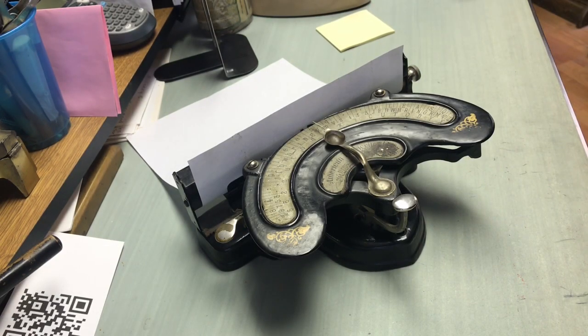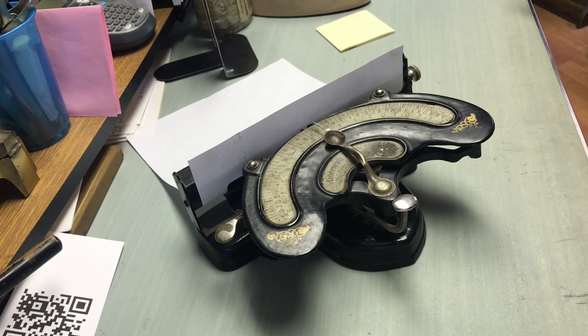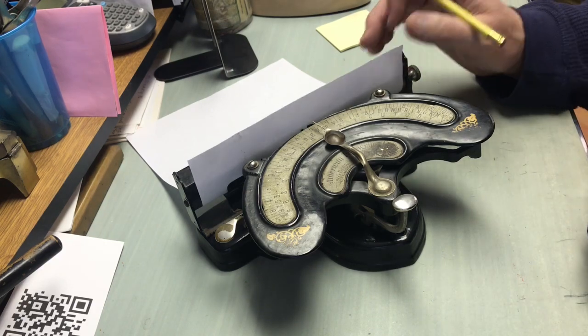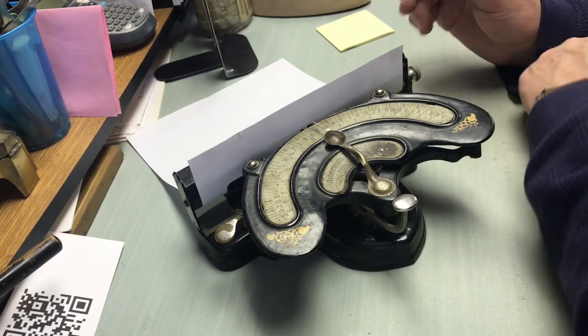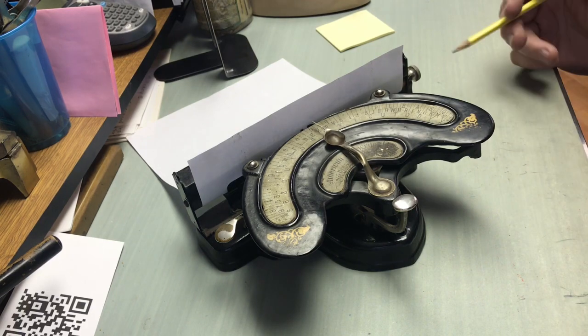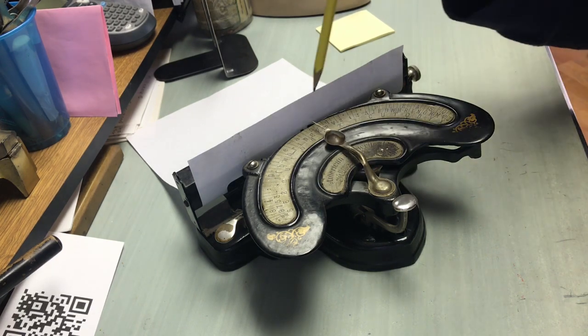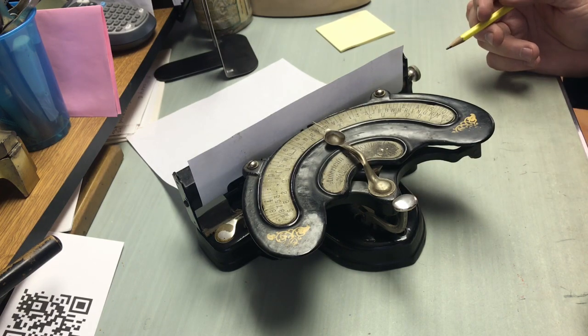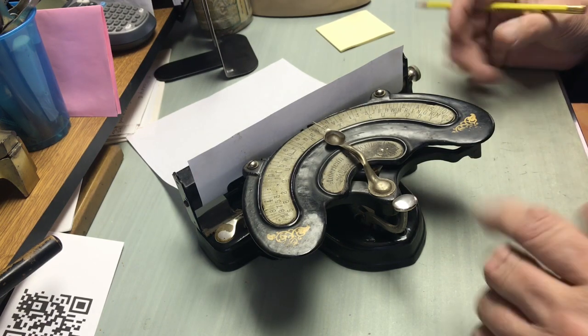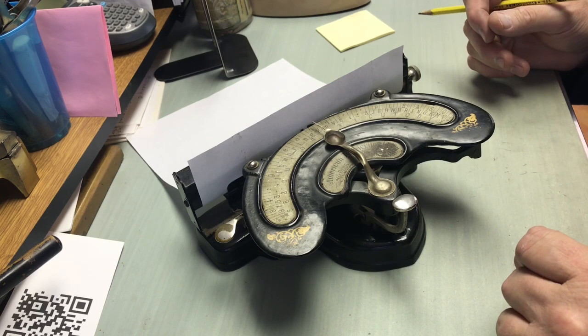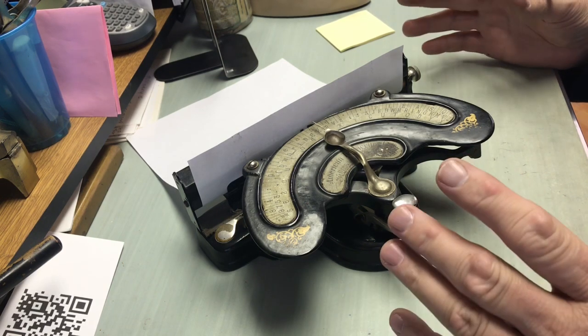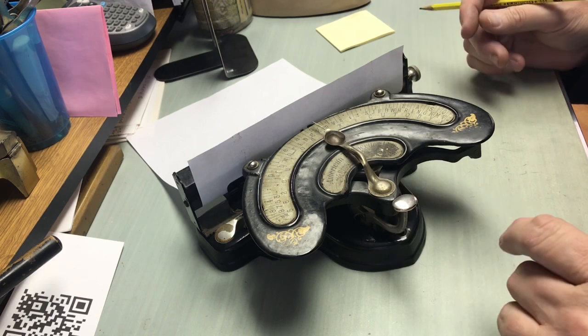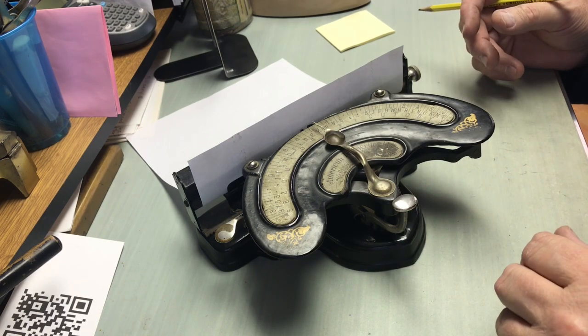This is the American Index Typewriter number two, and I put the piece of paper in here just to give you an idea how it worked. So it's not like a typewriter like we would normally think of where you'd have all sorts of keys. This printed one letter at a time, and it wasn't meant for like long correspondence, it was just meant for something like a short message that you wanted to be clear, like maybe a bill, or some such thing as that.